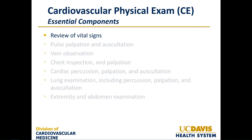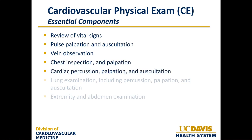The essential components of a cardiovascular physical exam include the following. It's very important to review vital signs, which allows one to determine whether a patient has high acuity cardiac issues. Pulse palpation and auscultation is critical, specifically referring to the carotid artery as well as distal pulses including radial arteries bilaterally. Vein observation is also critical, particularly for determining jugular venous pressure. Chest inspection and palpation are important, as is cardiac percussion and auscultation. Cardiac percussion, though not frequently used, can be very helpful in situations such as a large pericardial effusion.